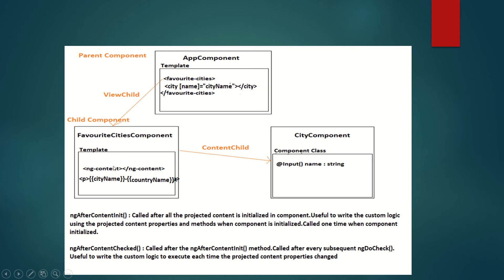In FavoriteCitiesComponent we need to write some business logic using the properties of CityComponent. Suppose city name is an input property of CityComponent, and we want to fetch country details from a back-end server using that name. ngAfterContentInit is the right place to write this logic, because it is called by Angular once after all the projected content is initialized, and it is called only one time in the lifecycle of the component.